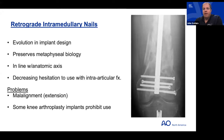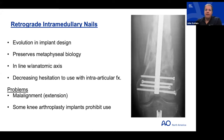Retrograde intramedullary nails have evolved significantly. Newer generation nails cluster interlocking bolts distally, allowing their use in extra-articular, simple, and sometimes complex intra-articular injuries. The nail preserves biology without disrupting the metaphyseal zone, and a good start point generally aligns the distal segment with the femur's anatomic axis. However, for certain fracture morphologies — especially shear injuries or in the presence of a TKA — malalignment can still be an issue.